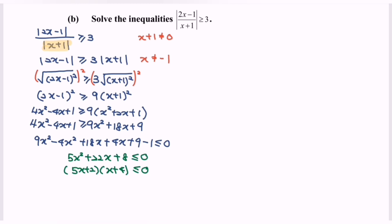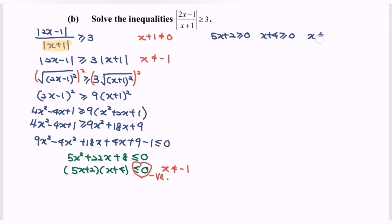Do remember to state the restriction where x cannot be equal to negative 1. Since this is the simplest form, we determine the sign, which is negative. Carefully split the situation and always assume positive: 5x plus 2 greater than or equal to 0, and x plus 4 greater than or equal to 0, with the restriction x cannot equal negative 1. So finally, x greater than or equal to negative 2/5, x greater than or equal to negative 4, and the restriction x cannot equal negative 1.